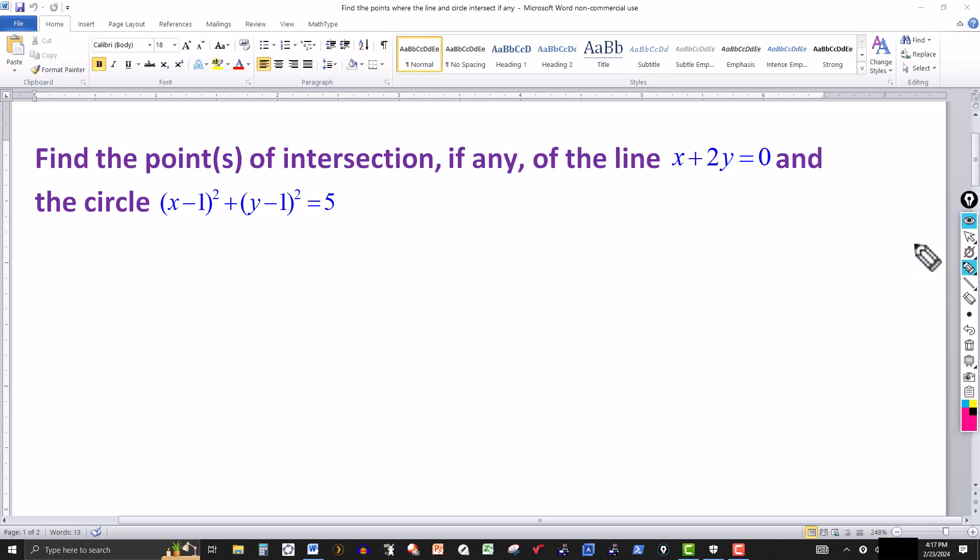So this one we can solve using a combination of elimination or substitution. Let's solve the first equation, the line x plus 2y equals 0, for x. So that gives me x is equal to minus 2y.